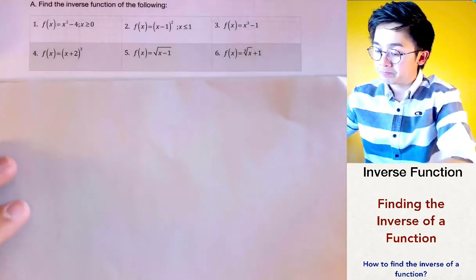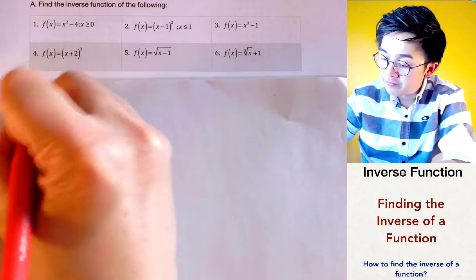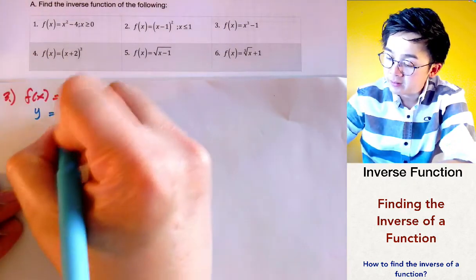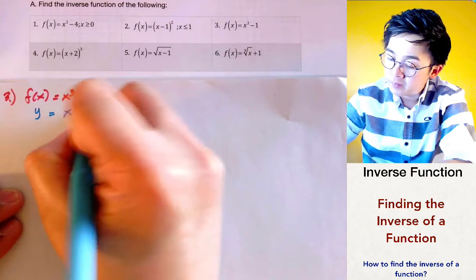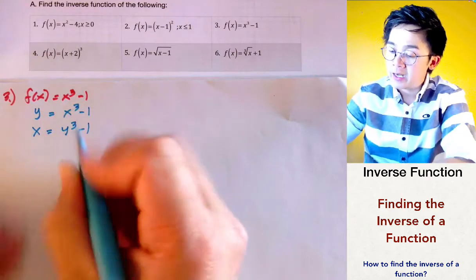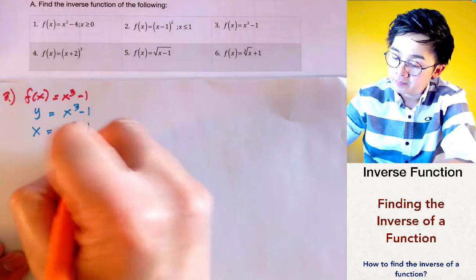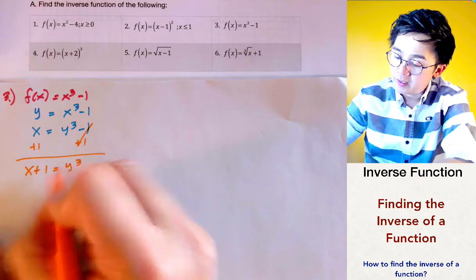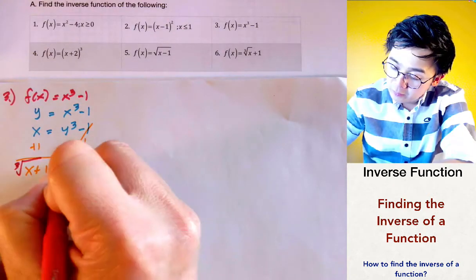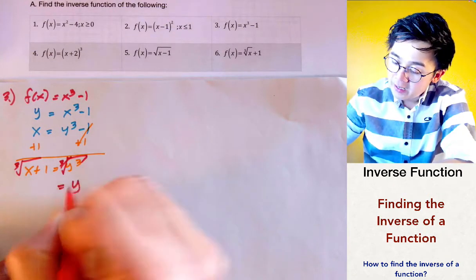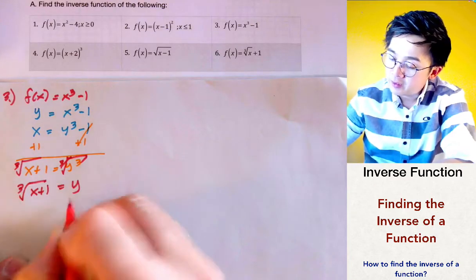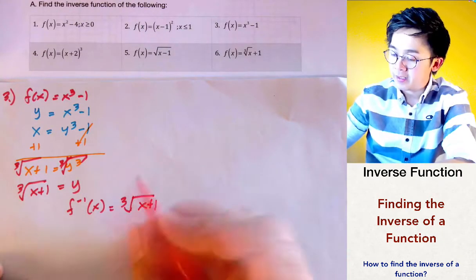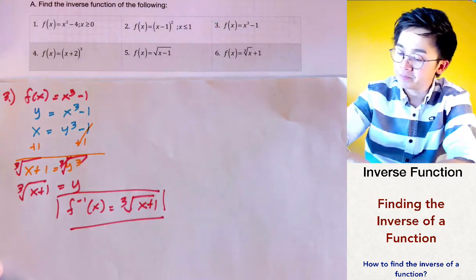For problem number 3, we have f(x) = x³ - 1. We change f(x) to y and interchange x and y, then solve for y. Adding 1 on both sides gives us y³, and taking the cube root of both sides gives us y = ∛(x + 1). So our inverse function is f⁻¹(x) = ∛(x + 1).